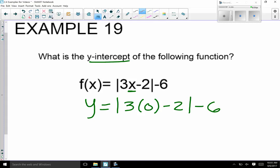So as we solve this out now, we have 3 times 0, which is 0. So now we have y equals absolute value, this is still a negative 2, minus 6.